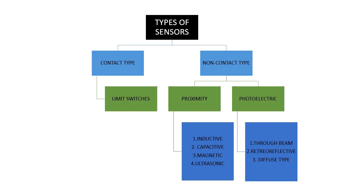In contact type sensors we have limit switches, which are very widely used. In non-contact type sensors we have proximity sensors. Based on working principle, sensing range, and other factors, they are categorized as inductive sensors, capacitive sensors, magnetic sensors, and ultrasonic sensors. We also have a second category called photoelectric sensors, which includes through-beam, retro-reflective, and diffuse type sensors.